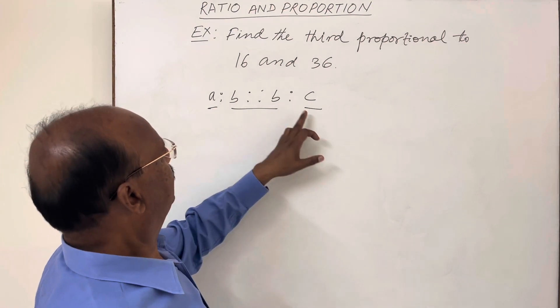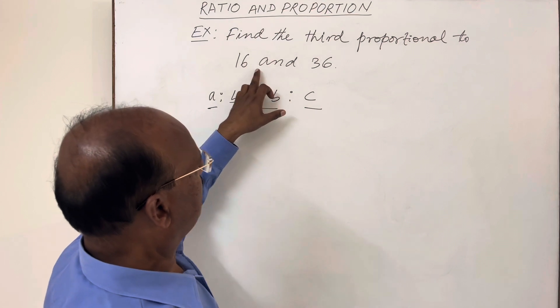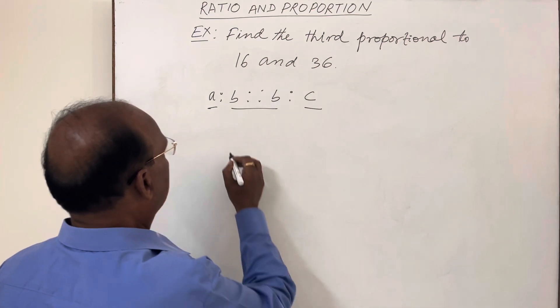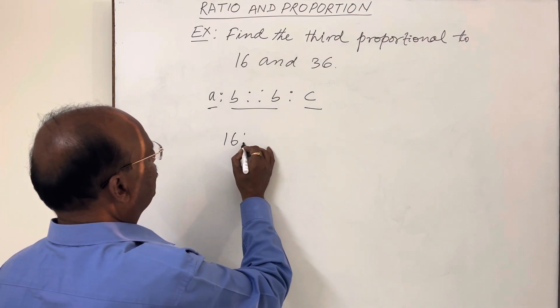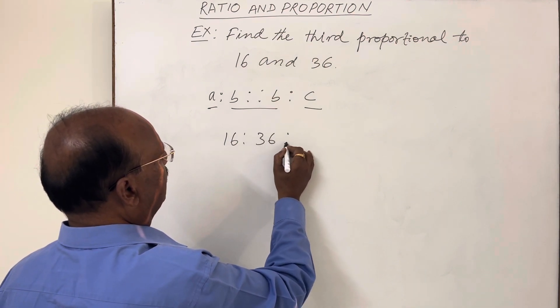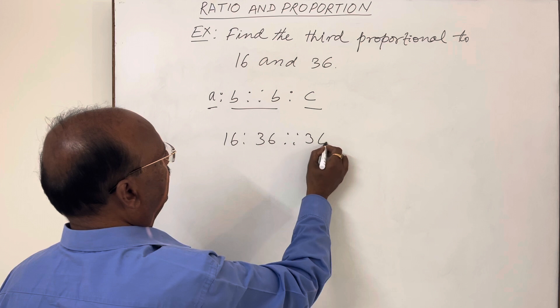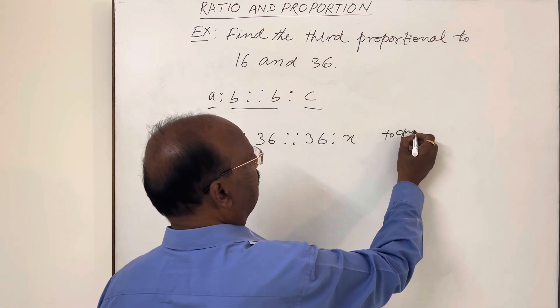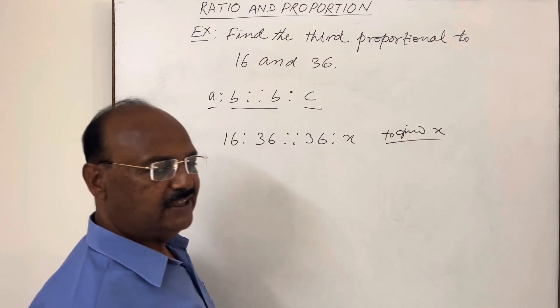So we have to find out third proportion of 16 and 36. We can write here 16 is to 36 is proportional to 36 is to X. Here we have to find the value of X, which is third proportion.